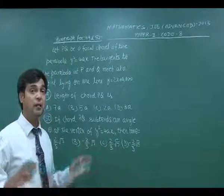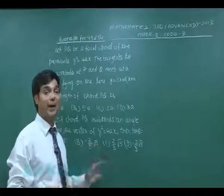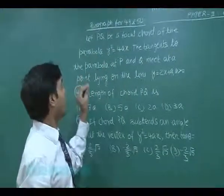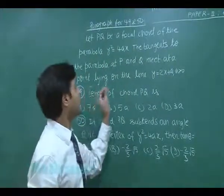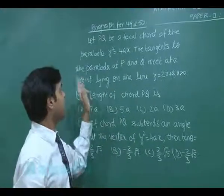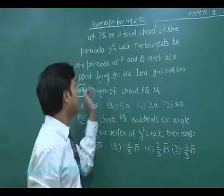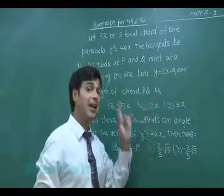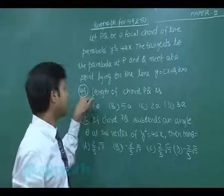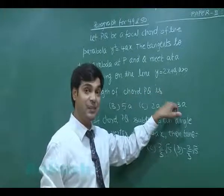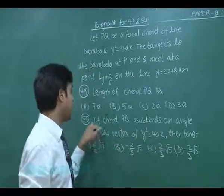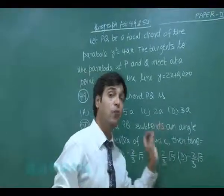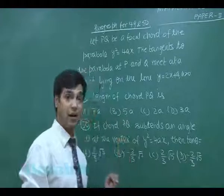Let's move to the next question. Which section contains the paragraph for question numbers 49 and 50. Let PQ be a focal chord of the parabola y² = 4ax. The tangents to the parabola at P and Q meet at a point on the line y = 2x + a, where a is a positive number. The first question asks for the length of chord PQ, and the second asks for the value of tan θ if chord PQ subtends an angle θ at the vertex.